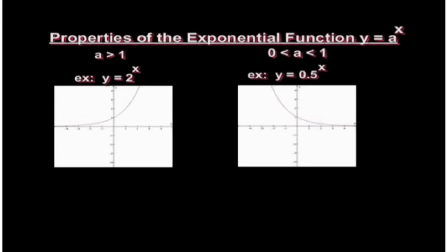If your base, the base a, is a number between 0 and 1, that is a decimal or a fraction between 0 and 1, so for example y equals 0.5 or 1 half to the power of x, then the graph curves down as we move towards the right.